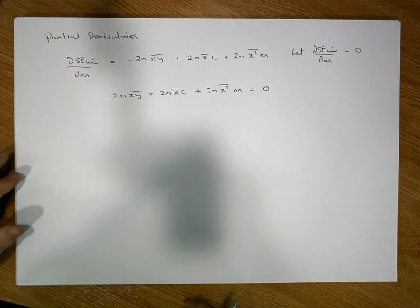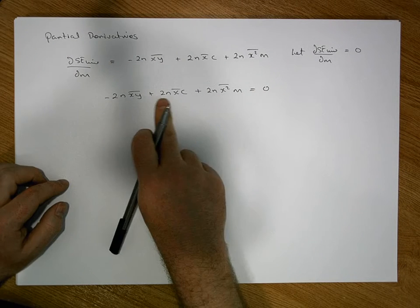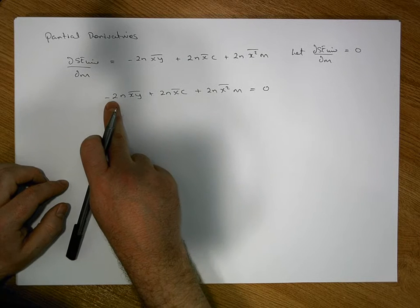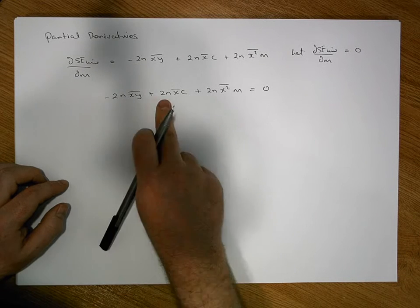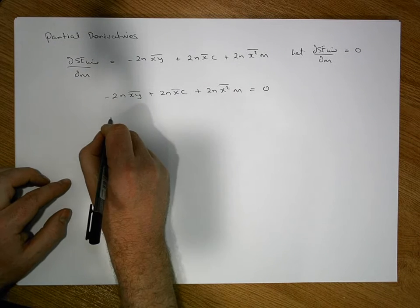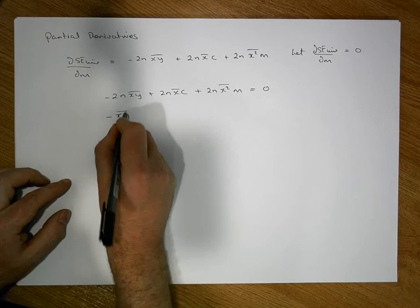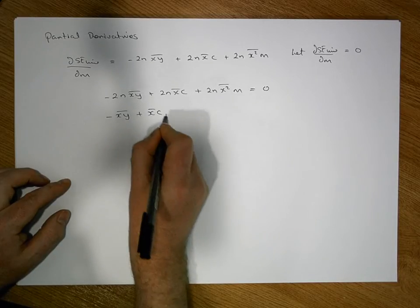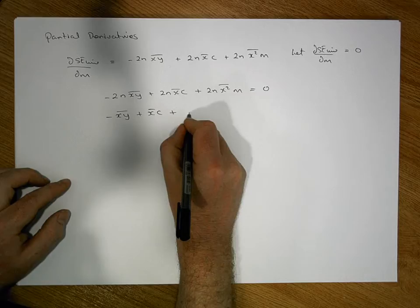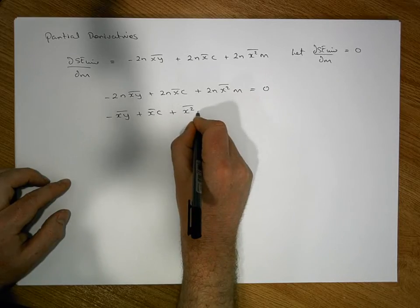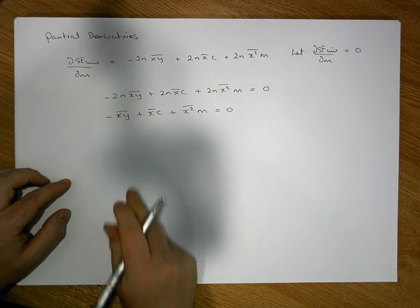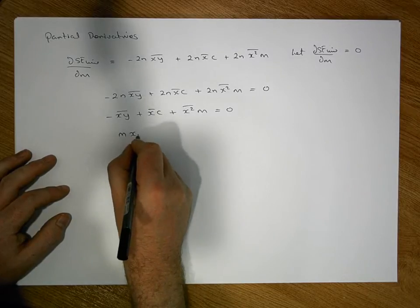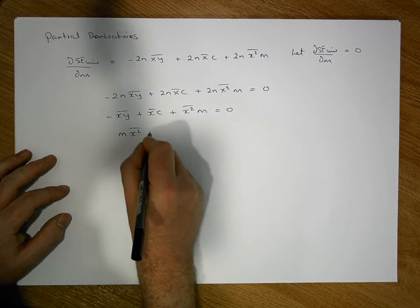We have a factor of 2n common across each term, so dividing across by 2n gives us: minus x̄ȳ plus x̄c plus x²̄·m equals zero. Rewriting, this becomes mx²̄ plus cx̄.